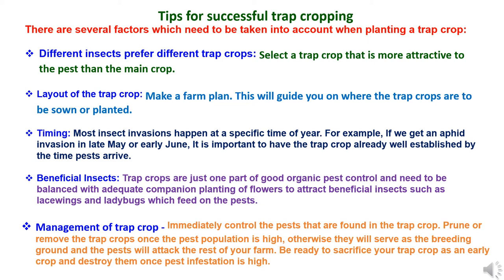Tips for successful trap cropping: Several factors need to be taken into account when planting a trap crop. Different insect pests prefer different trap crops. Select a trap crop that is more attractive to the pest than the main crop — consult your local agriculturist for assistance. Which trap crop you choose depends upon the pest you are trying to trap. If the plant is not sufficiently attractive to the pest, it won't work, so it is vital to pick the right ones. Often this is a matter of experimentation coupled with observation.